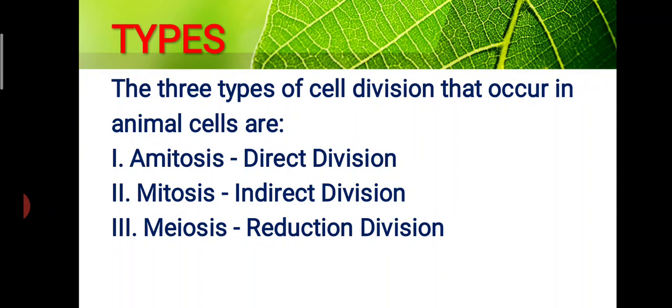First, we want to know what cell division means. We all know we are made up of cells. The life of every living organism starts with a small cell, and we may wonder how a single cell forms a large organism like this. All these are reproduced by division — the division of cells into daughter cells. We call it cell division, and there are three types of cell division.